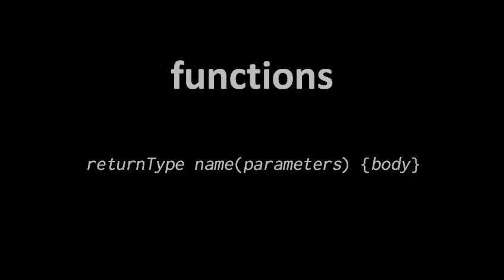A function in C is written by first declaring the return type, then space, then the name, and then the list of parameters in parentheses, and then the body, the actual statements of the function, in a set of curly braces.